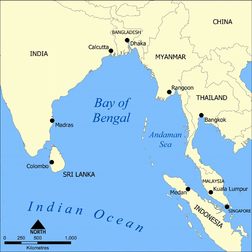Further southwest of Bangladesh, the Mahanadi, Godavari, Krishna, and Kaveri rivers also flow from west to east in South Asia and drain into the Bay of Bengal. Many small rivers also drain directly into the Bay of Bengal, the shortest being the Khoum River at 64 km. The Irrawaddy River in Myanmar flows into the Andaman Sea of the Bay of Bengal and once had thick mangrove forests of its own.